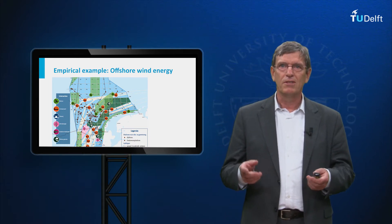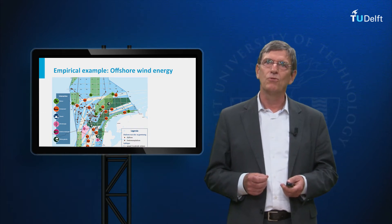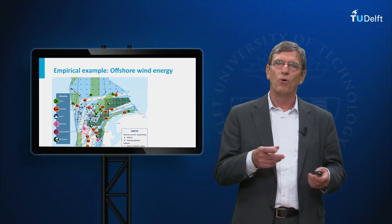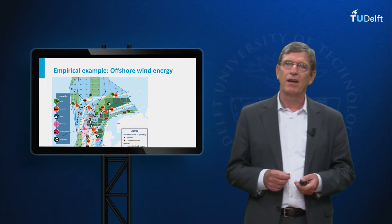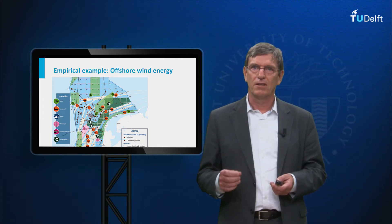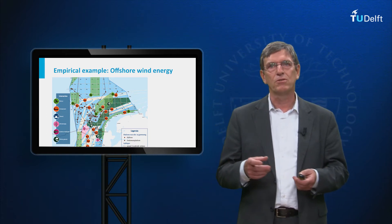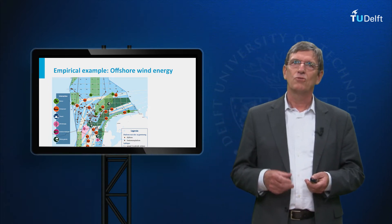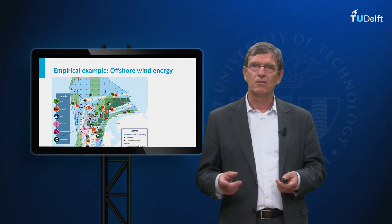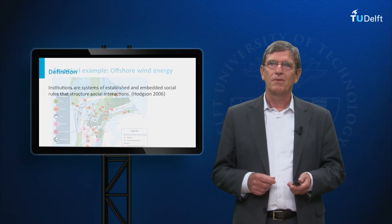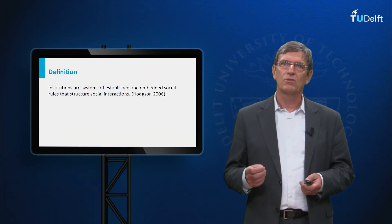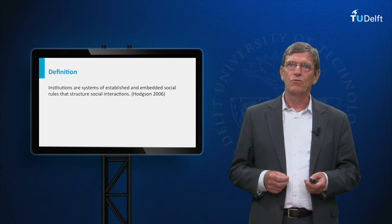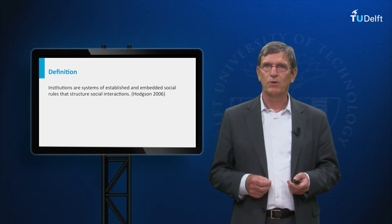These users of course need to adhere to certain social rules. It would not be useful to have military exercise areas very close to naval transport routes or to wind power areas. So we need to dedicate certain areas for certain purposes in order to make it possible that all these different users can make use of the North Sea. In other words, we need social rules on how to use this space for different purposes — social rules in order to structure the social interaction between the different users of the North Sea. These different rules can be either established or embedded.